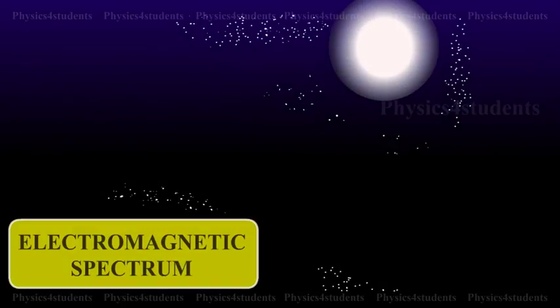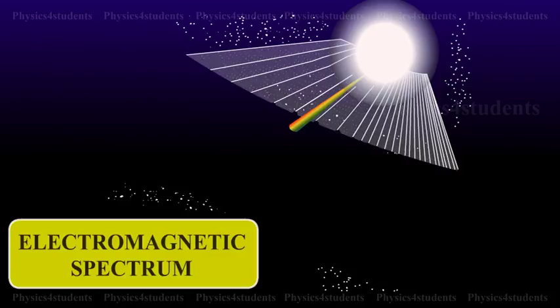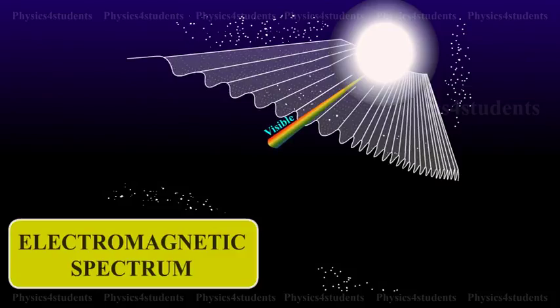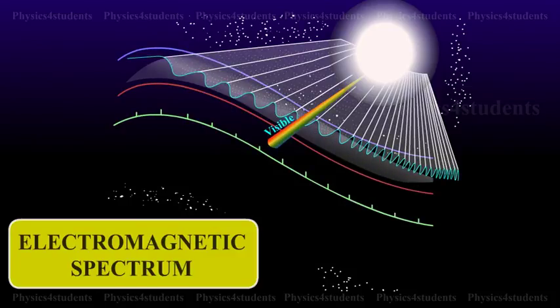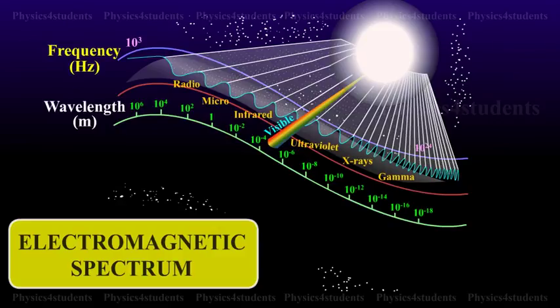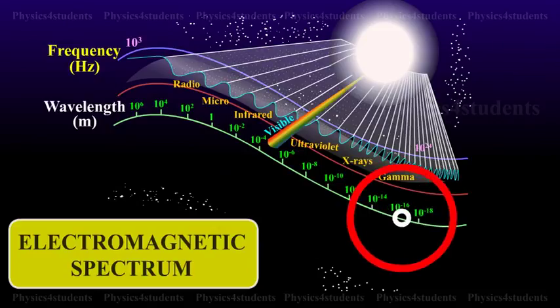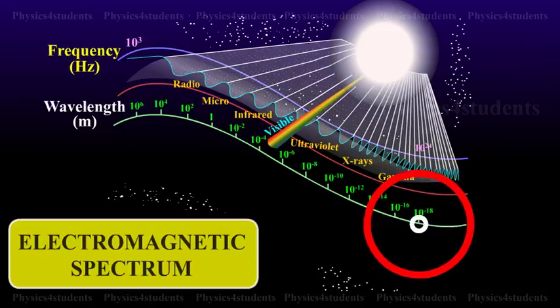Electromagnetic spectrum. The orderly distribution of electromagnetic waves according to their wavelength or frequency is called the electromagnetic spectrum. Electromagnetic spectrum covers a wide range of wavelengths or frequencies.